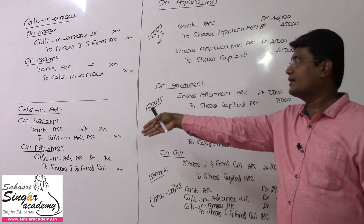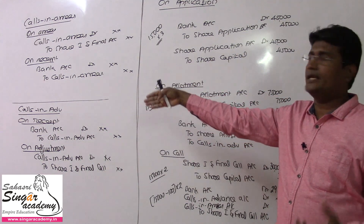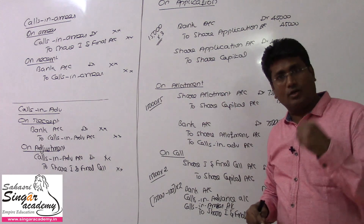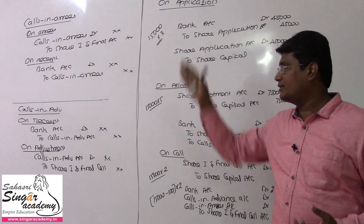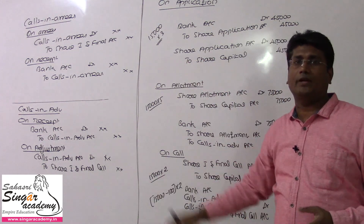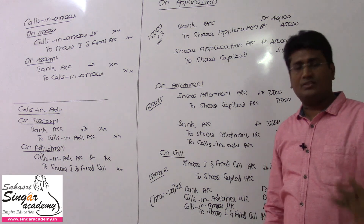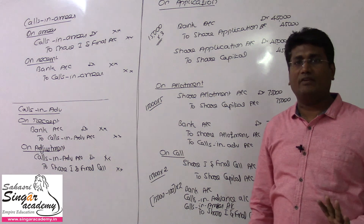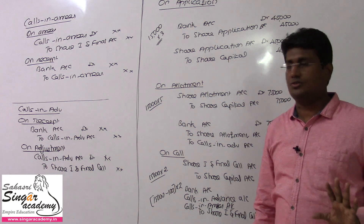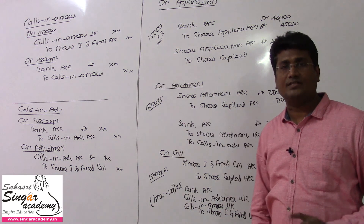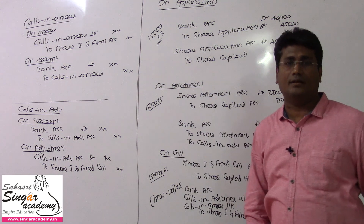As per the Companies Act there is a provision: 10 percent or 12 percent as per the Companies Act 2013. Of course, that concept is not available at the Plus 2 level. I hope you understood the Calls in Advance and Calls in Arrear concept.